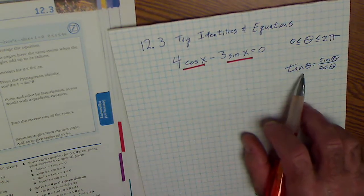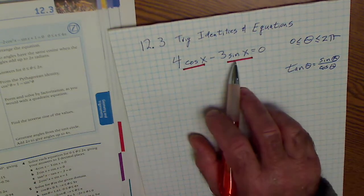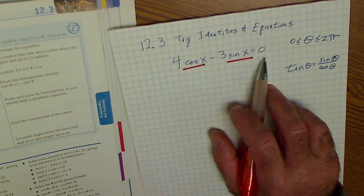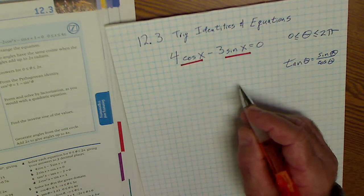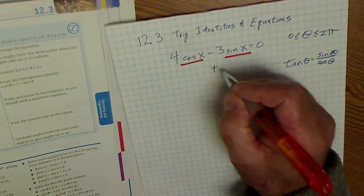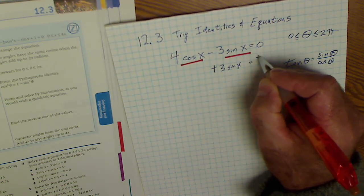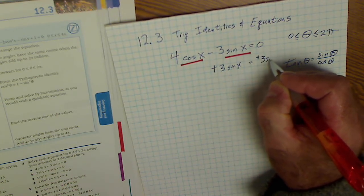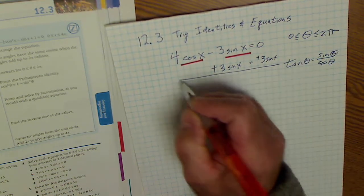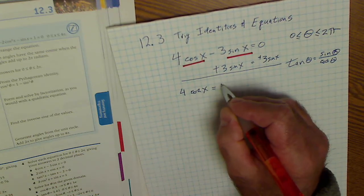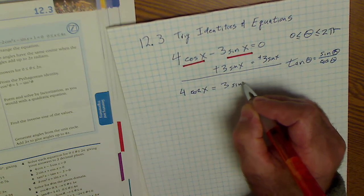And if I know this is where I need to go, I can tell I need to have sine on the opposite side of the equation and then divide through by cosine. So the first thing I'm going to do is add 3 sine of x to both sides. That'll give me 4 cosine of x is equal to 3 sine of x.